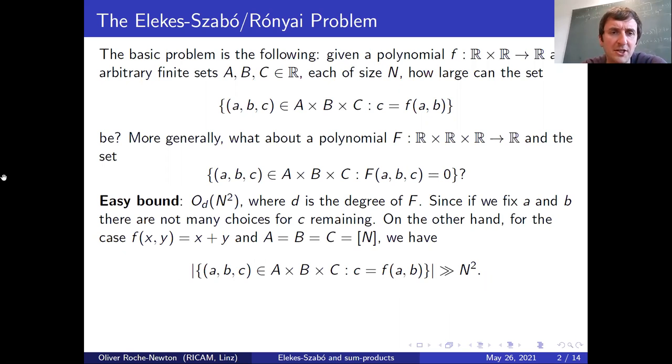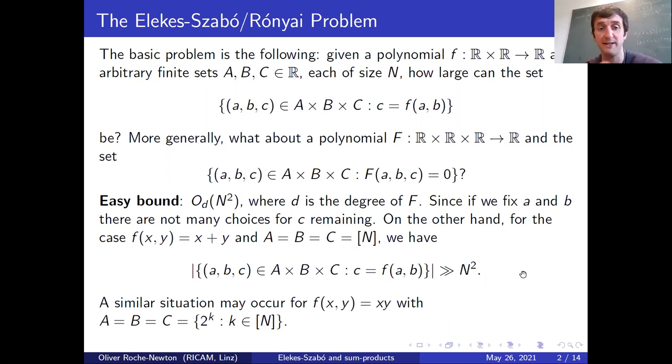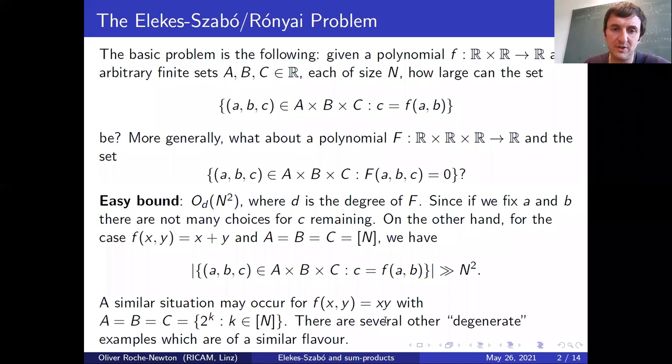Another case where this easy bound is tight is the following: a simple polynomial f(x,y) equals x times y. If we take a geometric progression, it turns out we're counting solutions to this equation, and again we can get about N squared solutions. We're seeing already maybe a hint that sum-products are going on here because we have two key examples: one being a simple polynomial defined by addition and the other by multiplication. There are lots of other degenerate examples which more or less come from one of these two.